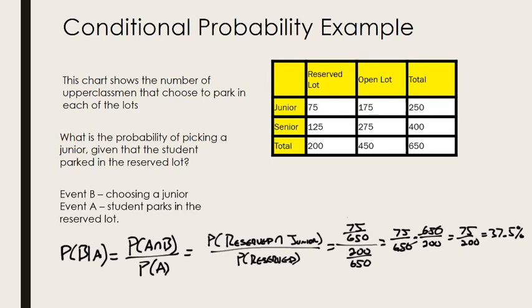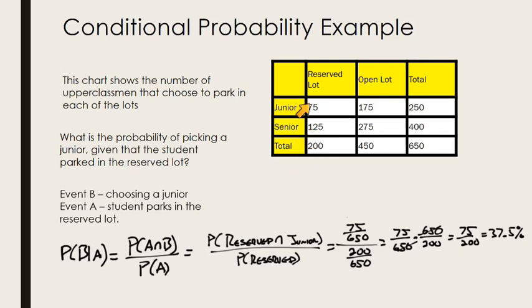Basically, what the formula does is give you what you might have seen intuitively: the probability of picking a junior given that the student parked in the reserved lot is 75 juniors out of 200. You may have been able to see that directly from the table, but I'd encourage you to learn how to use this formula because as problems get bigger and more complicated, it might be harder to see it intuitively.